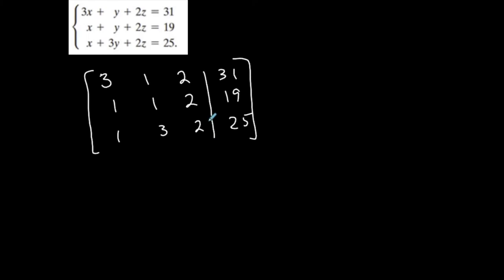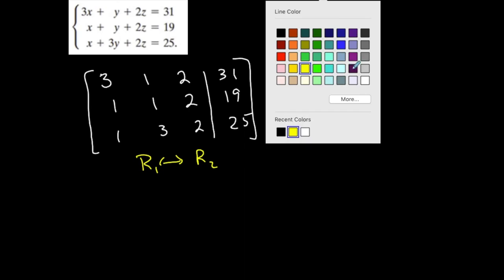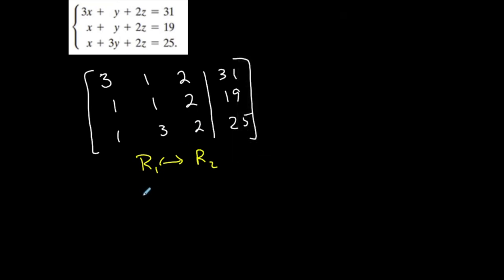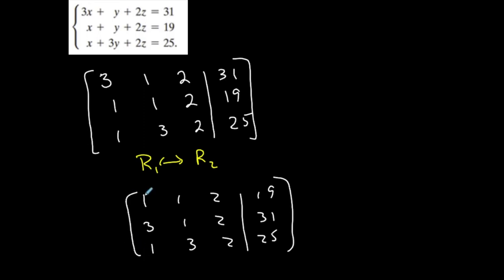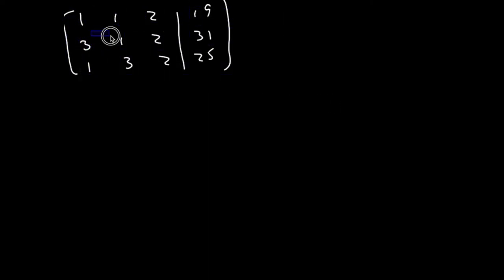My goal is to create reduced row echelon form. I'm going to start by creating zeros down the lower triangle. Because I want a 1 in the top-left corner, and dividing by 3 would give fractions, I'm going to interchange row 1 and row 2. So row 1 becomes 1, 1, 2, 19 and row 2 becomes 3, 1, 2, 31, with row 3 staying the same. That puts a 1 in the upper left-hand corner.